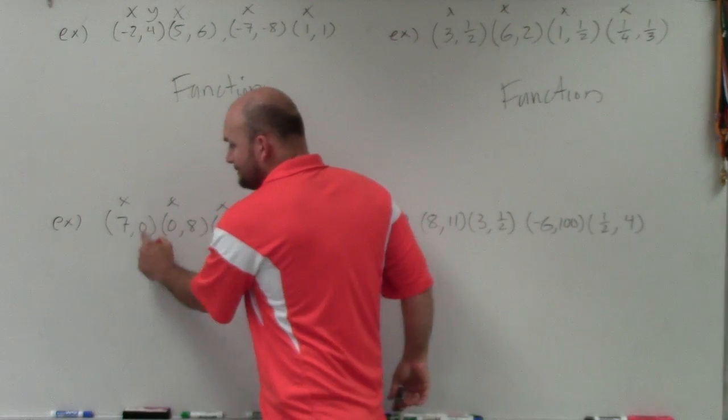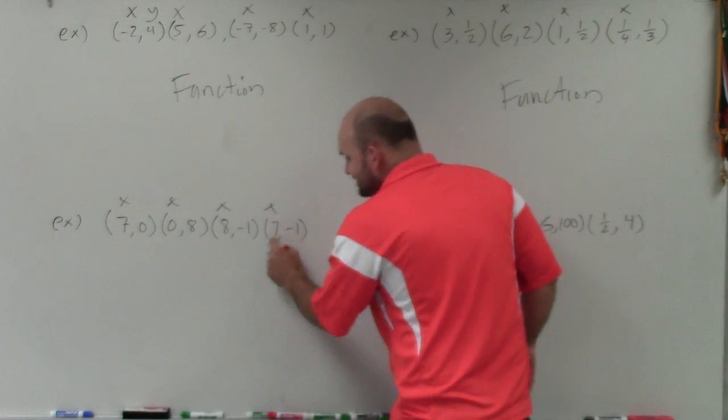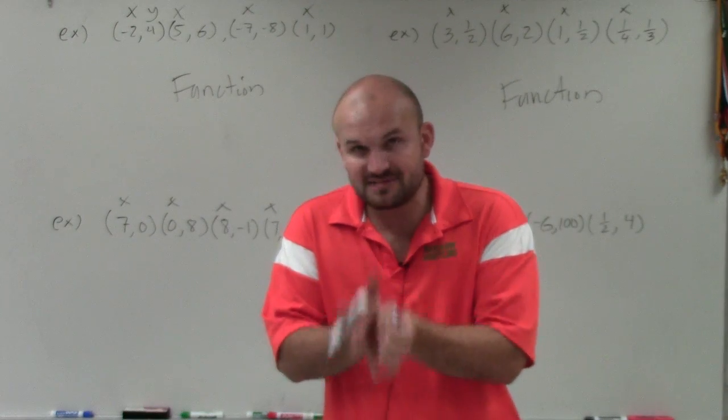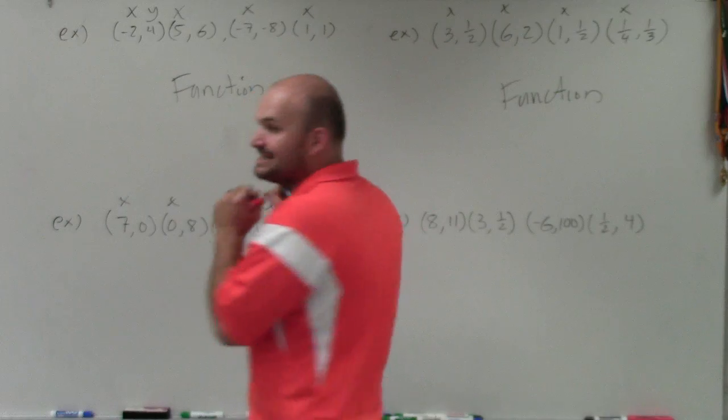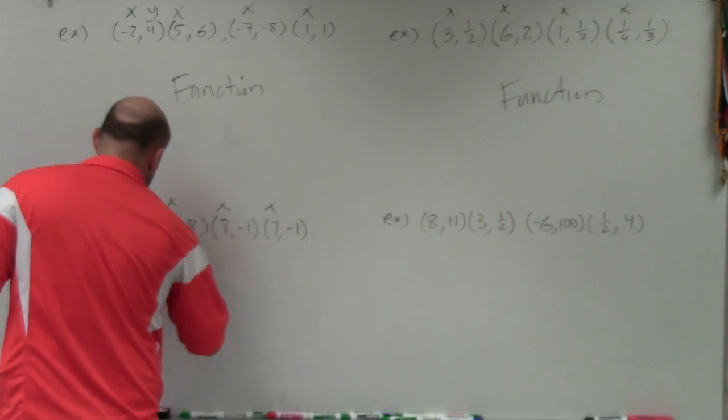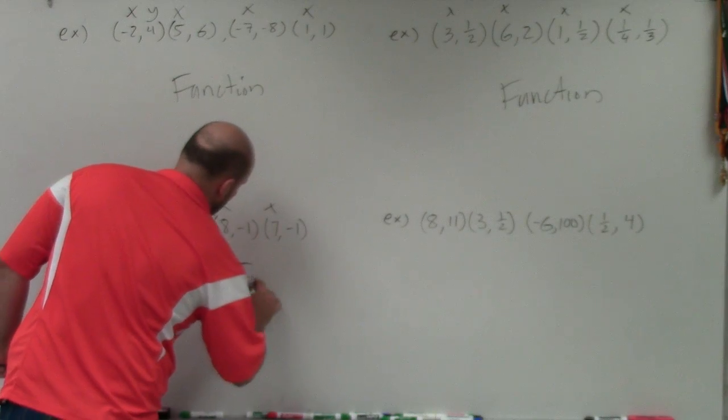And the issue is 7 maps to 0 and 7 maps to negative 1. So now we have a case where our input, our x-value, goes to two different y-values. And that is exactly what cannot happen with the function. So this is an example of not a function.